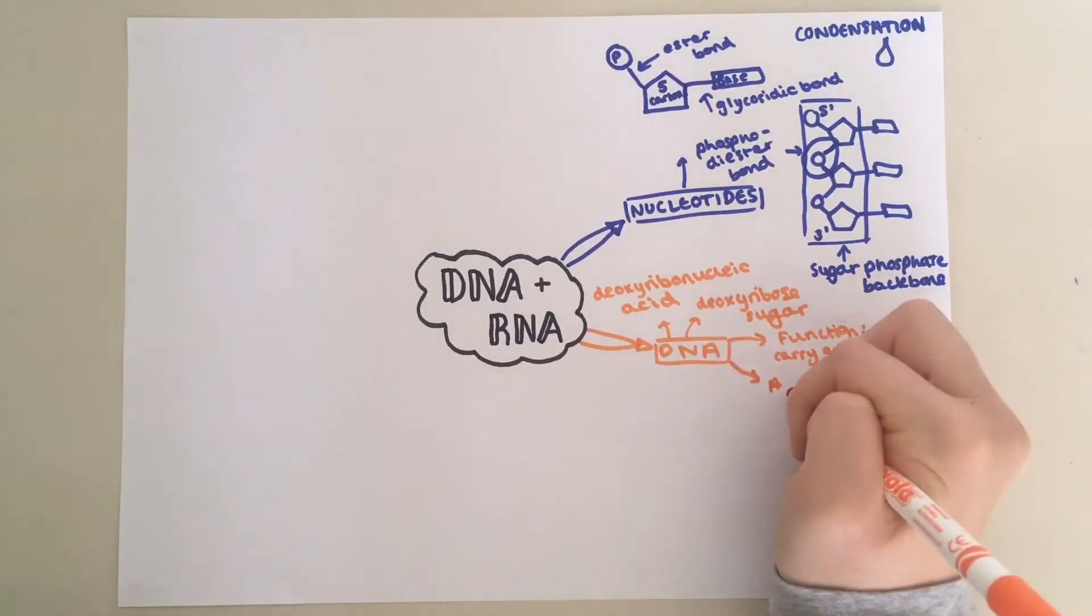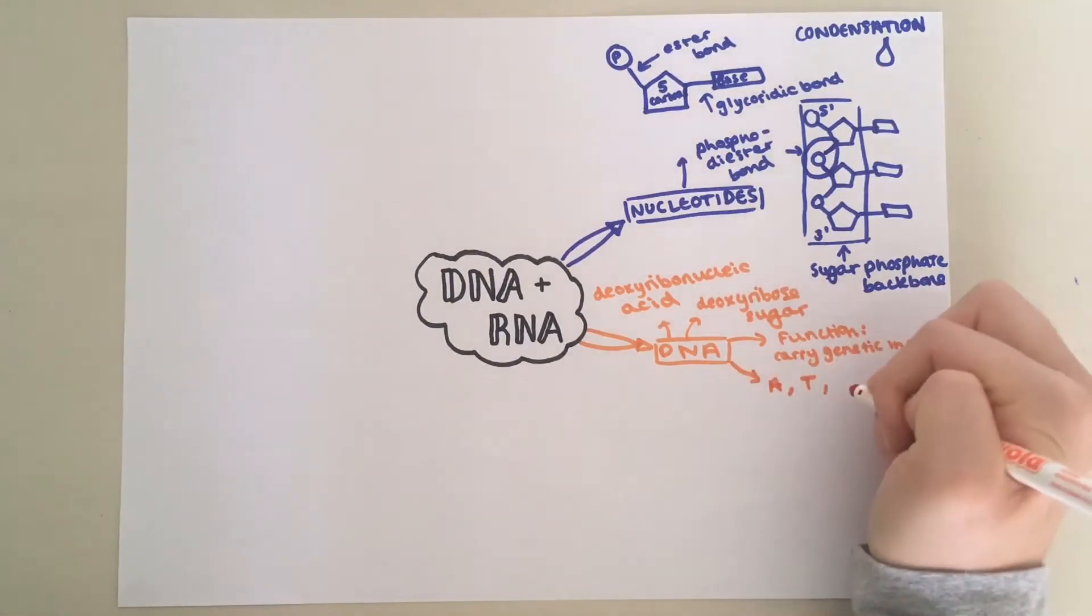There are four nitrogenous bases that can be present in a DNA nucleotide. You've got adenine, represented by A, thymine, represented by T, cytosine, C, and guanine, G.